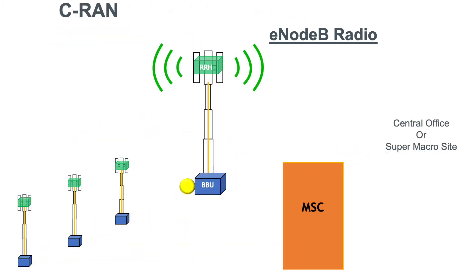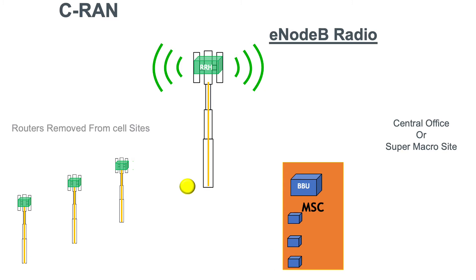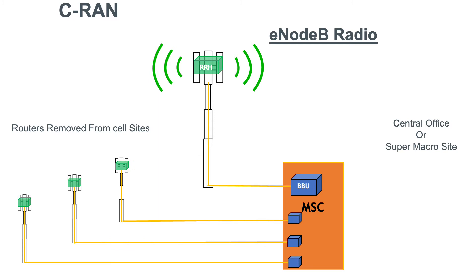So what's going to change? Well, first of all we're going to take all of those BBUs and move them into the MSC, or the central office, or super macro site. We'll also remove all of those routers from each one of those eNodeBs. This is going to greatly rationalize the system and help reduce costs.